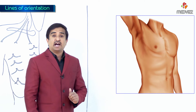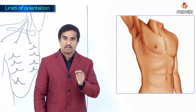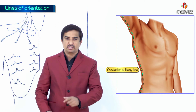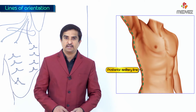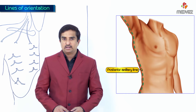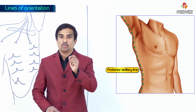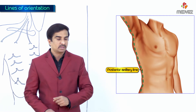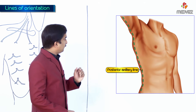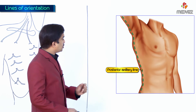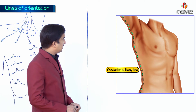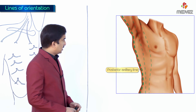And the last one is called the posterior axillary line. This posterior axillary line runs vertically downwards exactly from the posterior axillary folds.